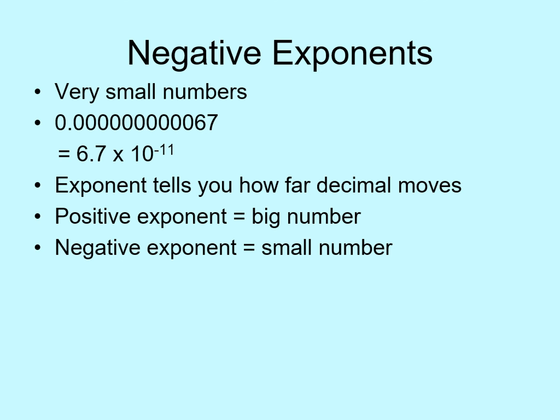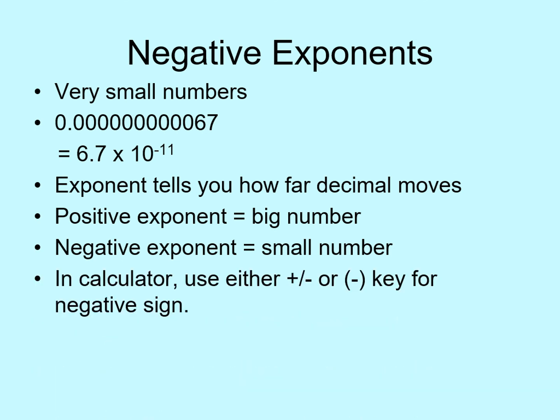We need to put this number into the calculator. This works just like with positive exponents, except you need to add one more step — you have to get that negative sign in there. Don't use the subtraction key on your calculator, as that will give you an error. Instead, look for either a plus-minus key or a negative sign in brackets. Just plug that in right before the exponent and it should work fine. So to enter 6.7 times 10 to the negative 11, you type 6.7, EE or EXP, then the plus-minus or negative key, and finally the exponent 11.